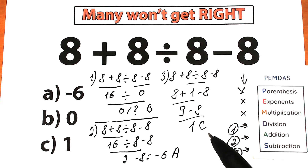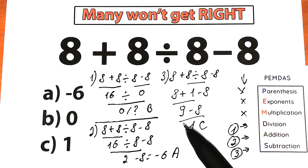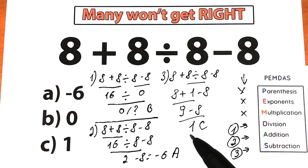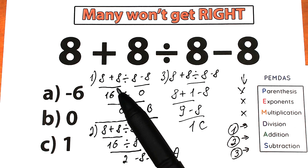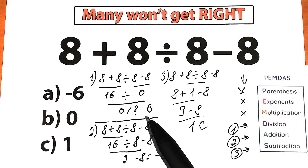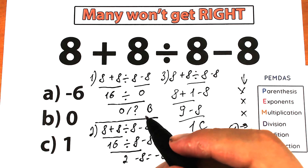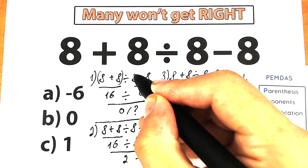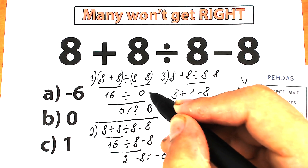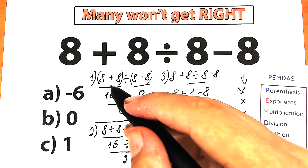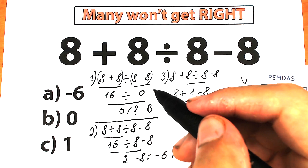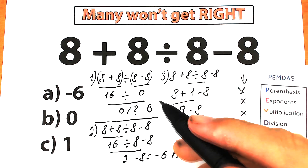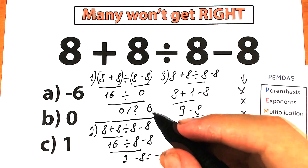A lot of students solve these challenges like that. What is the correct answer — Option A, Option B, or Option C? In the first interpretation, students solved randomly, jumping left to right, which is absolutely wrong. We can only get that approach right if we have brackets or parentheses — then evaluating inside the parentheses first and then dividing gives a correct answer with that notation. But in our case we don't have brackets, so that is an absolutely wrong answer.